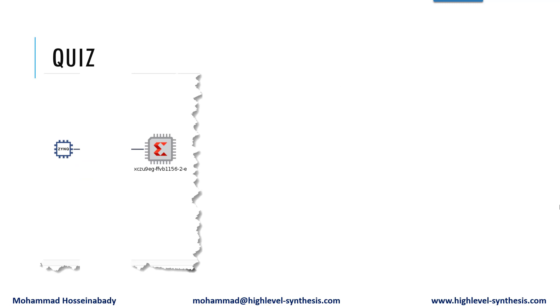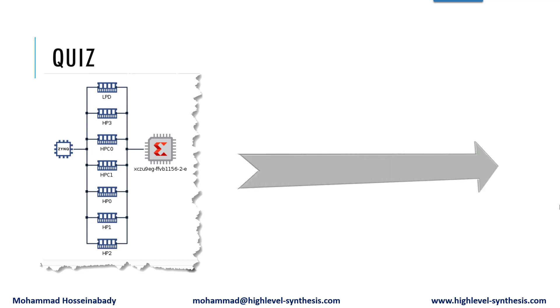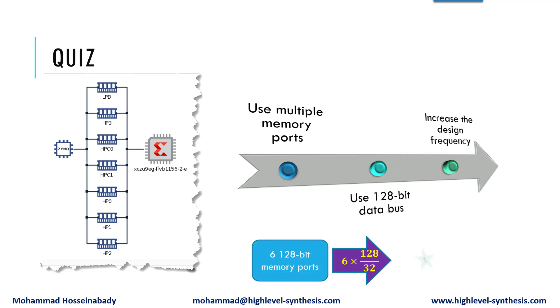Note that the Zynq UltraScale+ MPSoC that exists in the Ultra96 version 2 board has more than one memory port, and each port can transfer up to 128-bit data. Therefore, by utilizing six 128-bit memory ports, we can potentially improve the performance by a factor of 24. So I leave this speedup as a challenge for you.